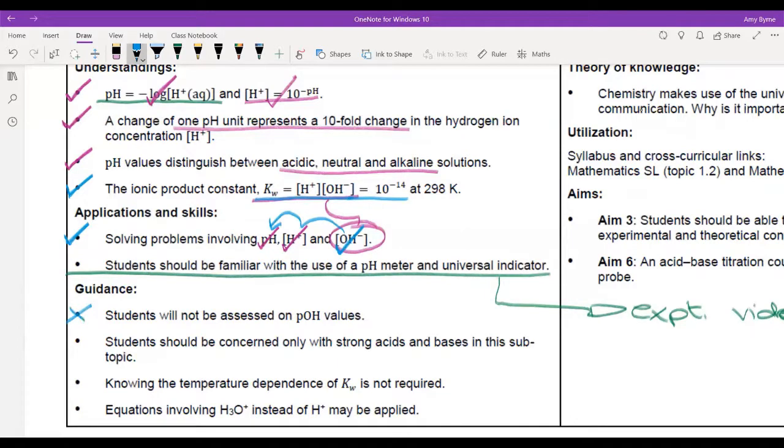We've talked about the ionic product constant, which is this KW equals 10 to the minus 14. And we've calculated OH minus to H plus to pH. You will not be assessed on that. I've only talked about strong acids and bases. That's because those are by far the easiest to calculate. There are extra steps we can do for weak acids and bases. And I will talk about them. I have explained that KW is temperature dependent. You don't need to know how it is temperature dependent just yet. And I've mentioned that you can use H three O plus instead of H plus.